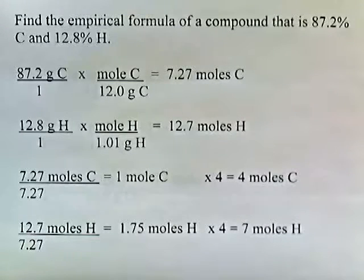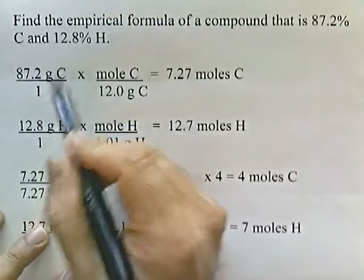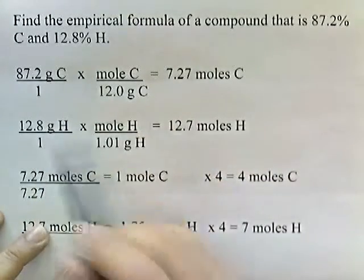Let's try another one. Find the empirical formula of a compound that's 87.2% carbon and 12.8% hydrogen. Again, we assume that we have a 100 gram sample, so we can say this is 87.2 grams of carbon and 12.8 grams of hydrogen.